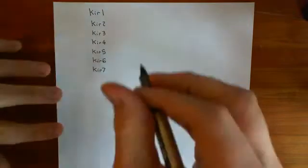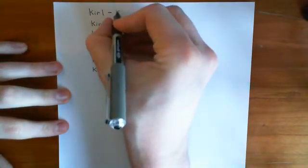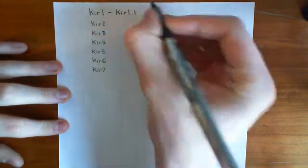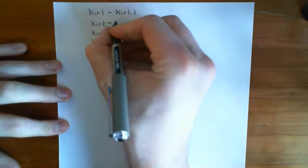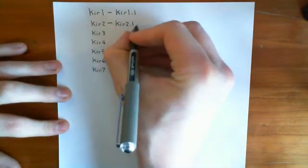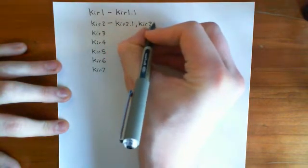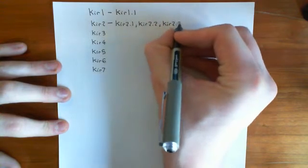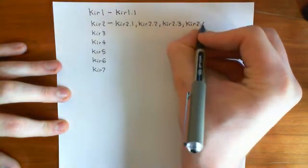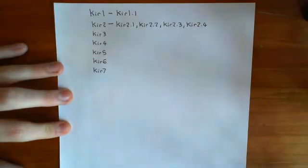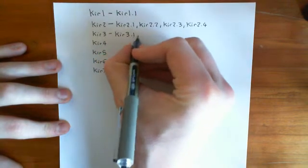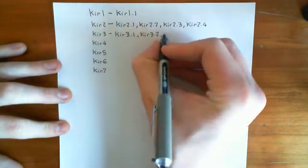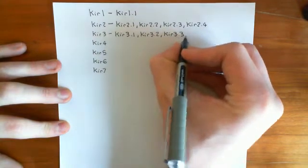Let's start off with how many genes are within each family. In the KIR1 family there is only one gene, known as the KIR1.1 gene. In the KIR2 family there are four genes: KIR2.1, KIR2.2, KIR2.3, and KIR2.4. In the KIR3 family there are also four members: KIR3.1, KIR3.2, KIR3.3, and KIR3.4.